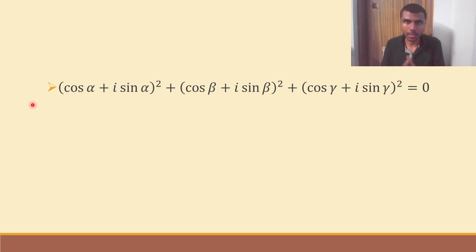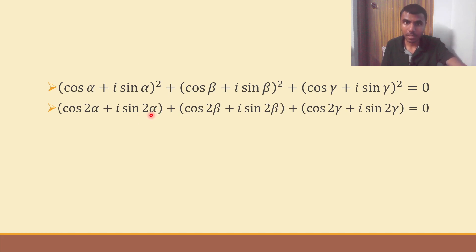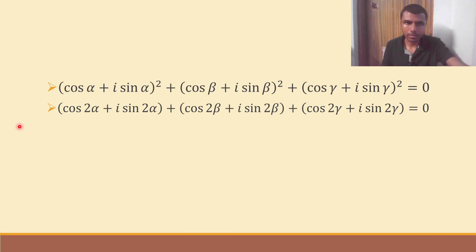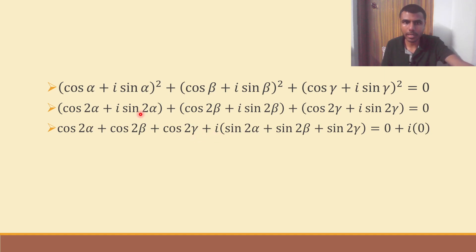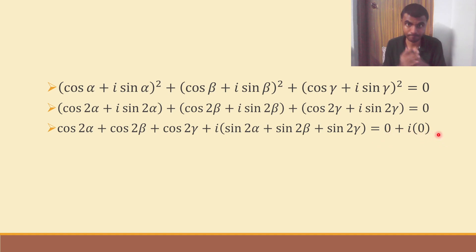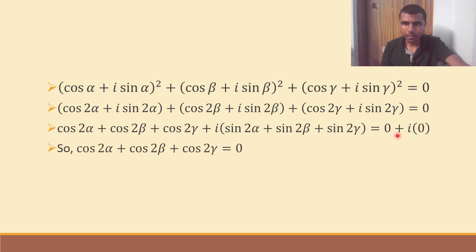Whenever there is a power like this — cos α plus i sin α, power 2 — by De Moivre's theorem, the power comes inside the angle: cos 2α plus i sin 2α. Likewise, cos 2β plus i sin 2β, and cos 2γ plus i sin 2γ, all equal zero. Bring the real parts together and imaginary parts together: cos 2α plus cos 2β plus cos 2γ plus i into sin 2α plus sin 2β plus sin 2γ equals zero plus i into zero. By comparing the real parts of LHS and RHS, I get cos 2α plus cos 2β plus cos 2γ equals zero.